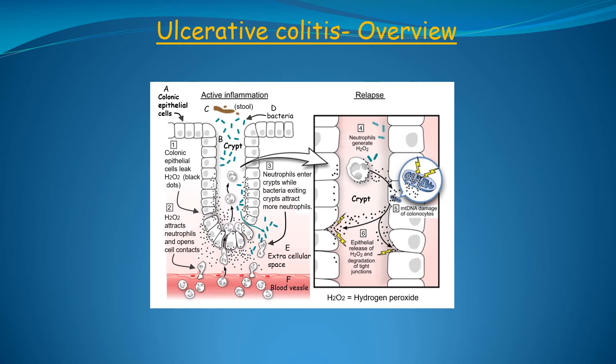Before we finish, I present a brief overview of the overall mechanism that the evidence indicates is the cause of ulcerative colitis and relapse. According to the evidence, this is all you need to know in order to get a good understanding of what causes ulcerative colitis and relapse, which is the medical term for the flares commonly seen with this disease. I've labeled the important microscopic structures that make up the colonic epithelium with the letters A to F and the steps involved in the process with the numbers 1 to 6.